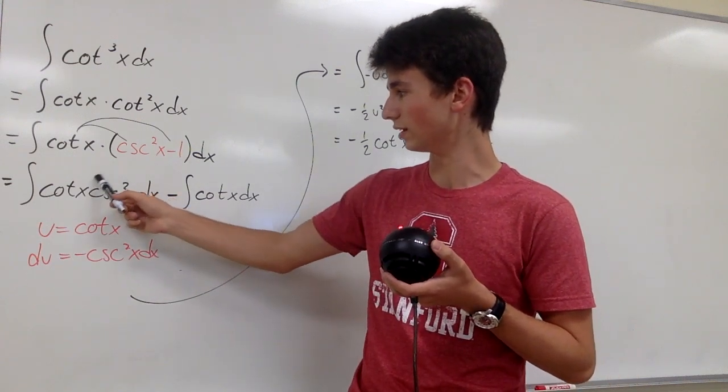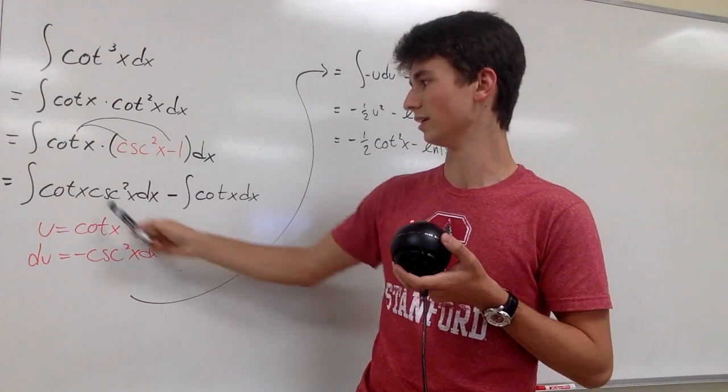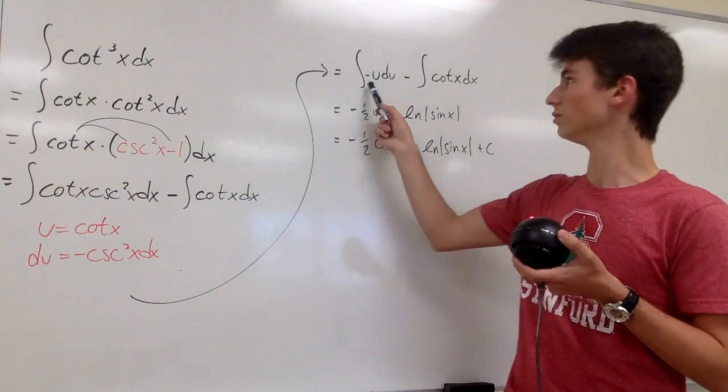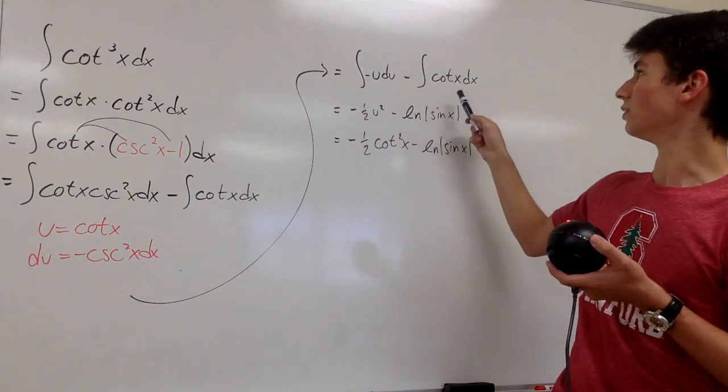And we can see the cosecant squared dx right here. And then this is our u. So plugging everything in, we get negative u du minus the integral of cotangent x dx.